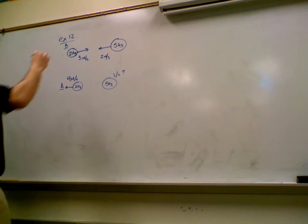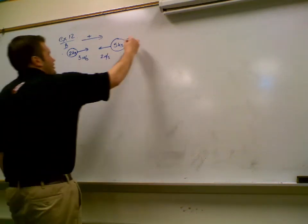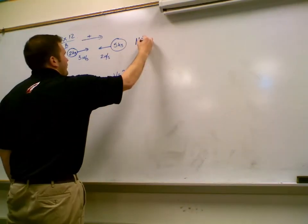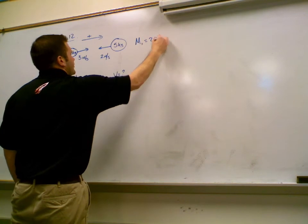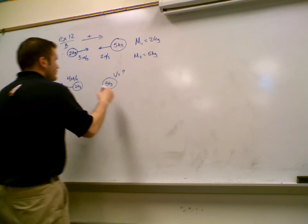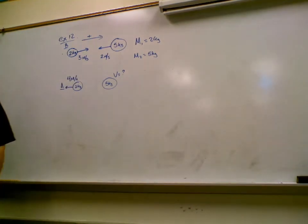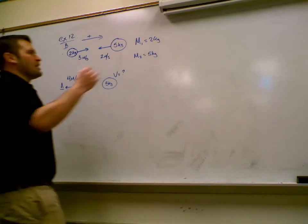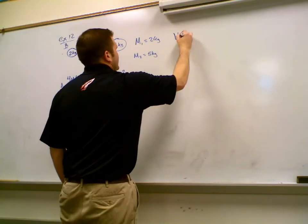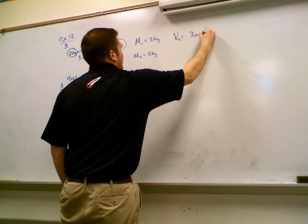To the right? Okay, we can go that way, positive, that's fine. So we have, we'll call mass 1 the 2kg ball, we'll call mass 2 the 5kg ball. Now, V1 initial, what is V1 initial? 3. 3, positive or negative? Positive, right?